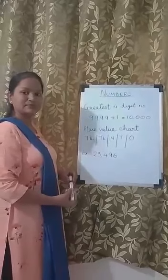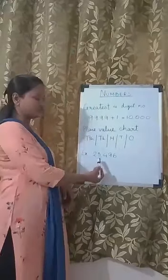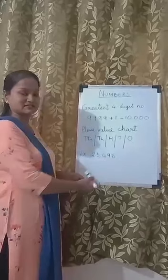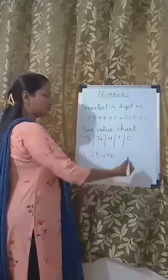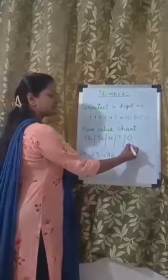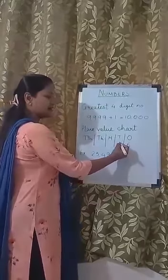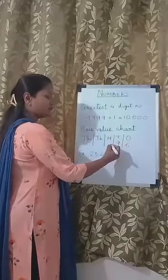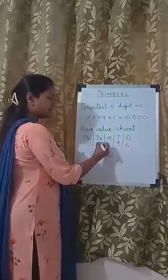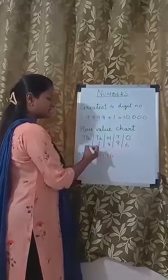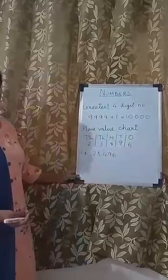For example, I have a number 23,496. If I am going to add this number in the place value chart: 6 is in the 1's place, 9 is in the 10's place, 4 in the 100's place, 3 in the 1,000's place and 2 in the 10,000's place.